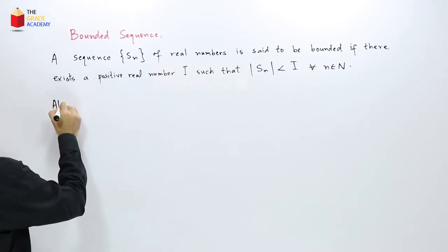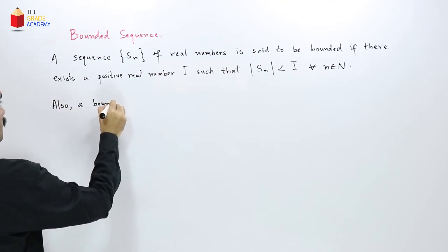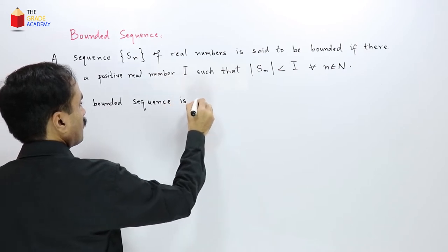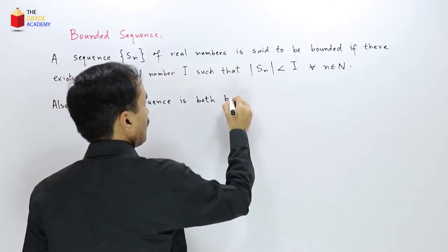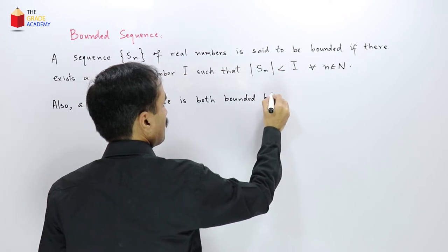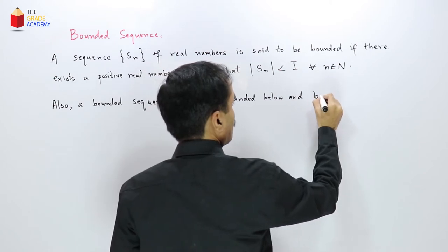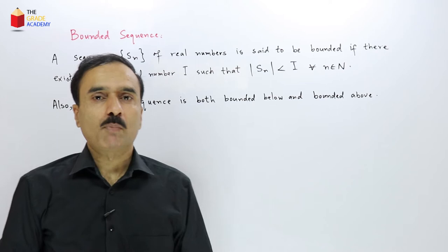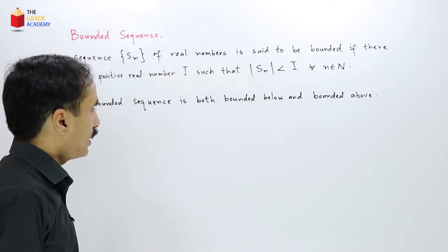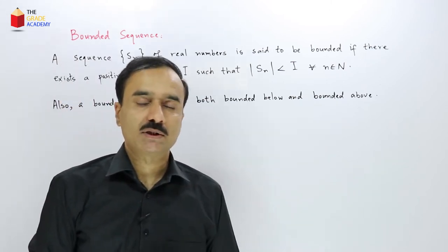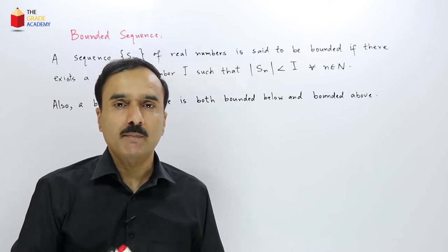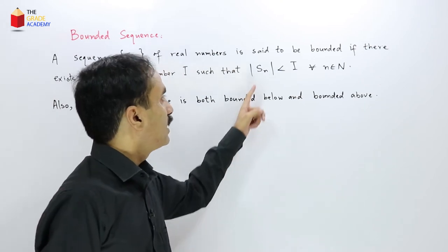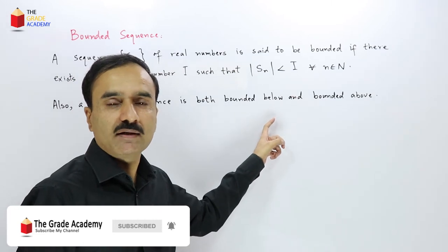A bounded sequence is both bounded below and bounded above. According to the completeness property, any subset of real numbers that is bounded above has a supremum, and similarly if it is bounded below then it has an infimum. So a bounded sequence will have both an infimum and a supremum.